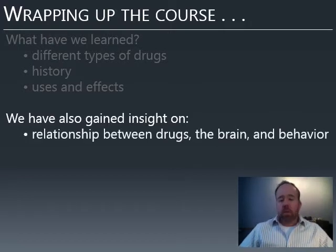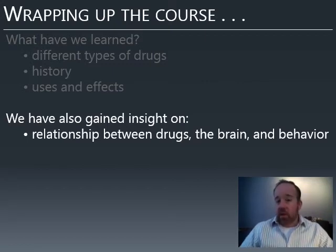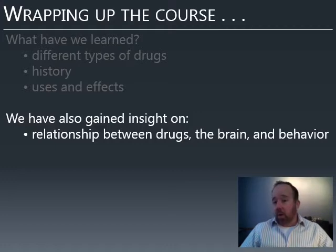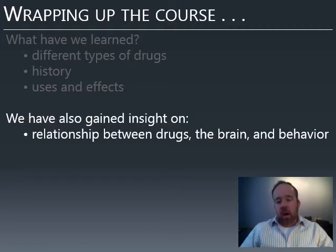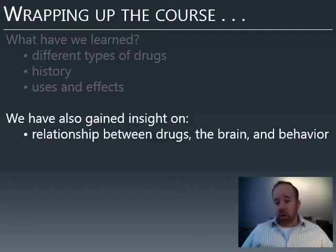One thing we've learned about is the relationship between drugs and the brain and behavior. Drugs are just chemicals — they don't have moral value, they don't have intentions. But once we introduce them to the brain, they can act on it in more or less specific ways. Some drugs are very specific; some, like alcohol, have broader effects. In any case, they all affect the brain, which controls our behavior. That itself becomes an issue when we try to assess responsibility for our actions.